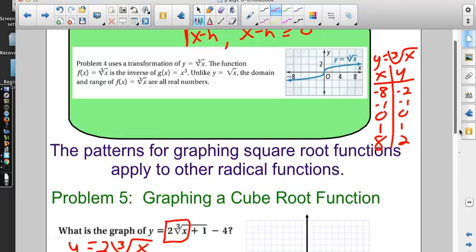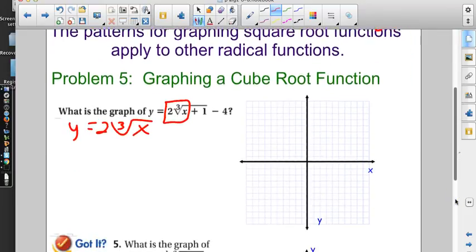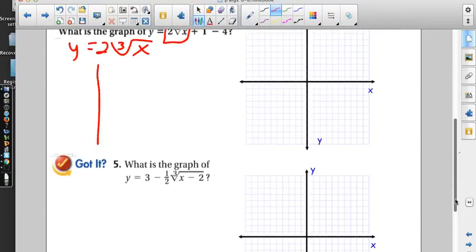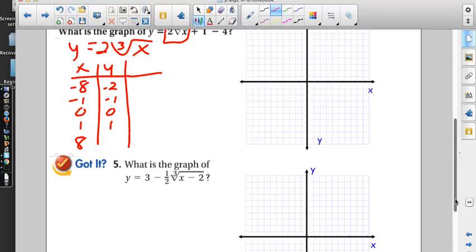Those are our standard parent function points for the cube root of x. But in this problem we have to multiply because we have an a value that's not standard. We'll start just like we did with square roots - if this were just the cube root of x, that's what I'd use. But this one has a 2 in front, so we take our y values and multiply them by 2. That gives us the shape of the graph.